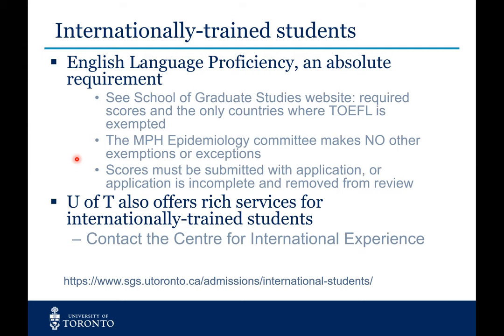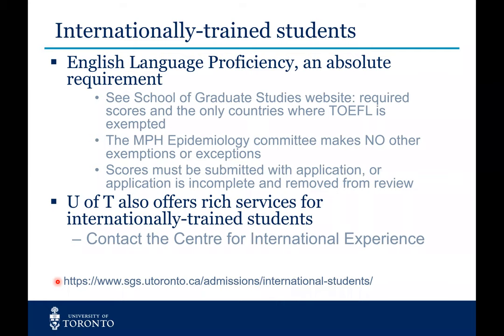For internationally trained students, there is also a requirement for English language proficiency, and there's lots of information about this on the SGS website. You need to make sure those scores are submitted with the application at the time of the deadline, otherwise it will be considered incomplete. Through the SGS link, there are resources for international students, including a translation of grades — what your GPA at your international institution equates to at U of T to determine your eligibility.